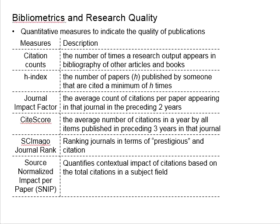Next is the journal impact factor. It refers to the average count of citations per paper appearing in a journal in the preceding two years. The higher this number, the better the quality of the publications it implies.